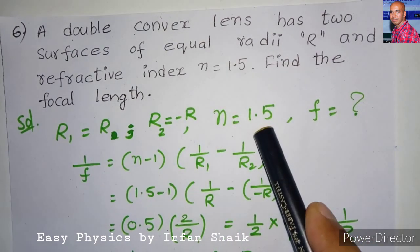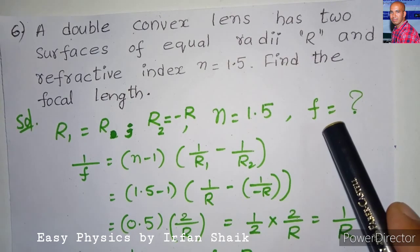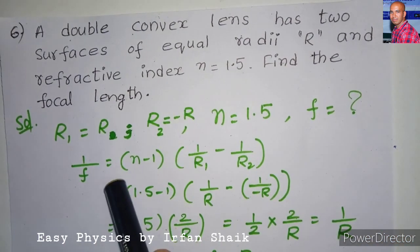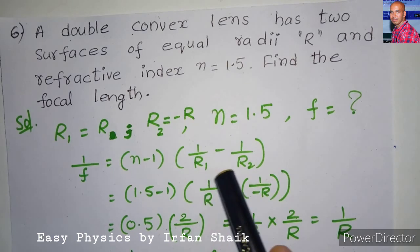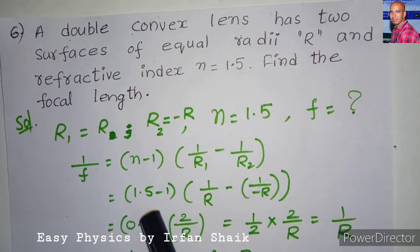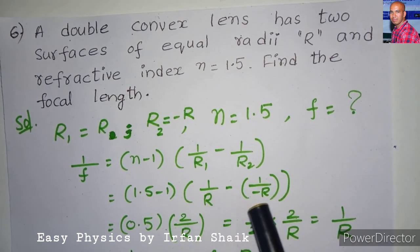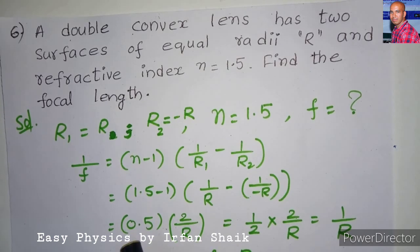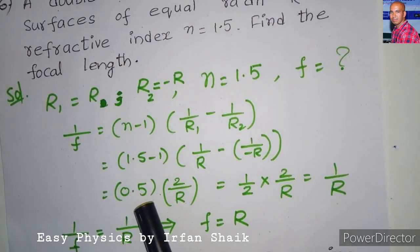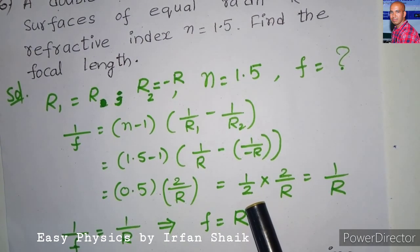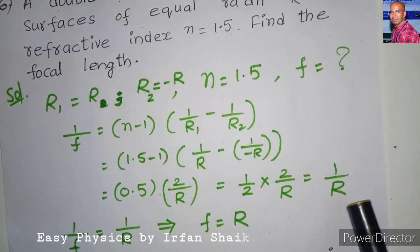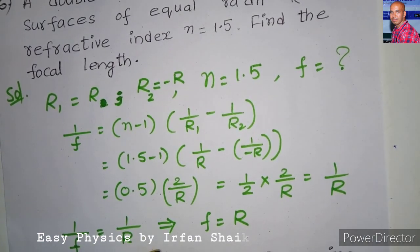Substituting the values: 1/F = (1.5 − 1)(1/R − 1/(−R)) = 0.5 × 2/R. Since 0.5 = 1/2, we get 1/2 × 2/R = 1/R. Therefore, if 1/F = 1/R, the focal length F = R.